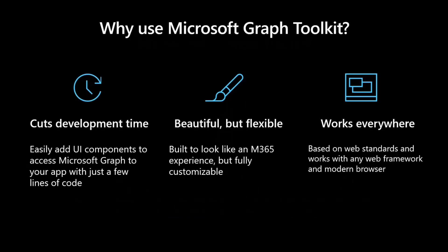It helps you cut down on dev time — you don't have to rebuild all of these functionalities to build a capability that fetches files based on a group ID, team ID, or any of these things. It's basically drag and drop inside your app. They're beautiful, themed around Microsoft 365 so they look native to the platform, but they're also very flexible. You can bring your own brand inside these controls. It works everywhere — SharePoint, Teams, Electron, or just as a regular SPA.